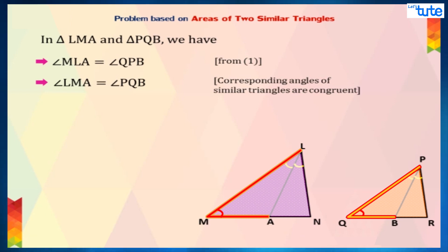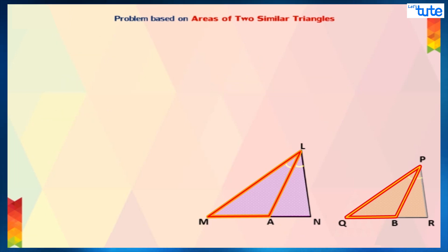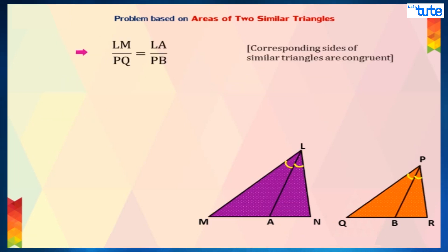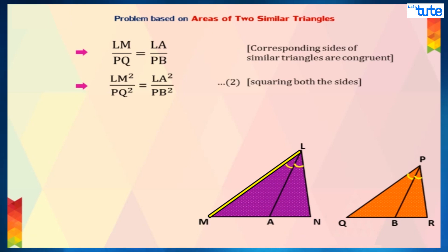And also since angle LMA and angle PQB belong to the two similar triangles LMN and PQR, we can conclude that angle LMA is equal to angle PQB. Thus, in triangle LMA and triangle PQB, by applying the AA criterion of similarity, we can conclude that triangle LMA is similar to triangle PQB. Since corresponding sides of similar triangles are proportional, we can say that LM upon PQ equals to LA upon PB.